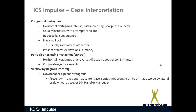Periodic alternating nystagmus is a central disorder — horizontal nystagmus that reverses direction every two minutes. If you suspect a central disorder, record for more than two minutes to catch direction-changing or periodic alternating nystagmus; these patients typically have conjugate eye movement. Vertical nystagmus — downbeat or upbeat — is another central origin finding, present with eyes open at center gaze, sometimes made worse by bilateral or downward gaze, and sometimes seen in the Dix-Hallpike maneuver.